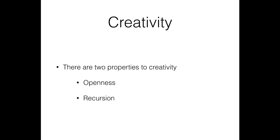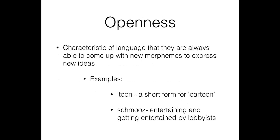There are two properties of creativity in language: openness and recursion. Openness means many lexical categories of language are open to new morphemes to express new ideas. You can create 'toon' as a short form for cartoon, 'schmooze,' or a new word that's now quite the rage in English: 'Google.' When Google was created, it was just a company name, but now we use 'I'm Googling' to mean using Google to find something — using Google as a verb or a noun.